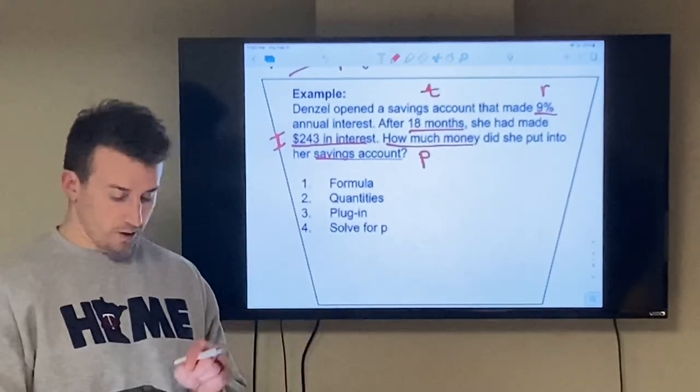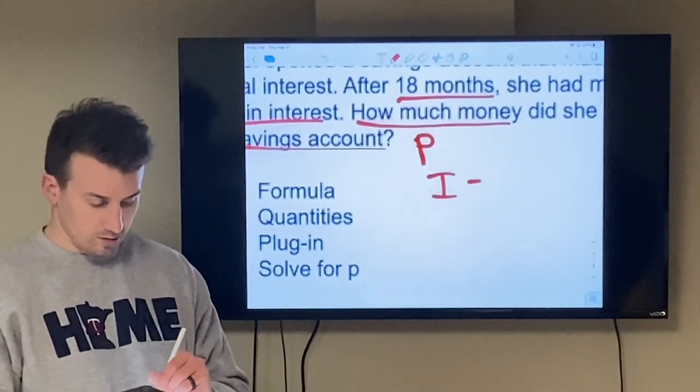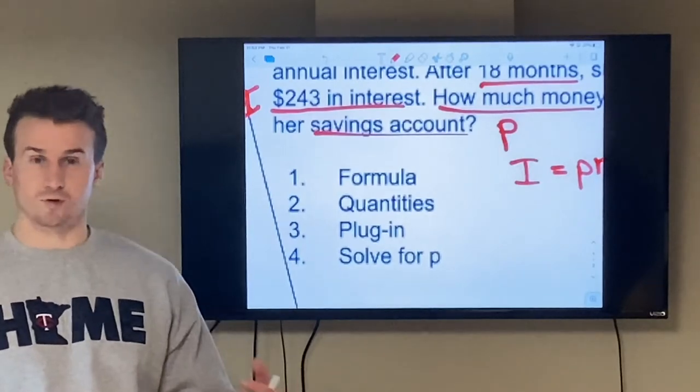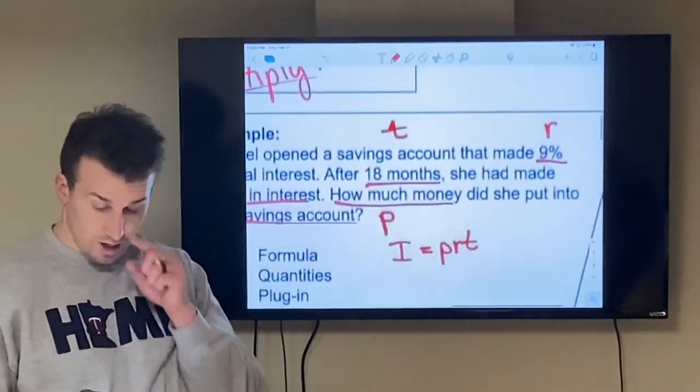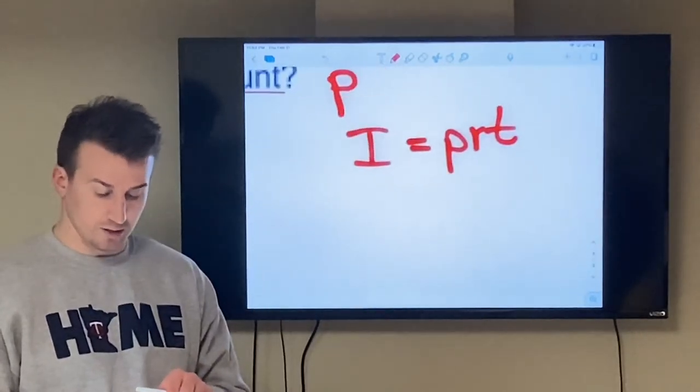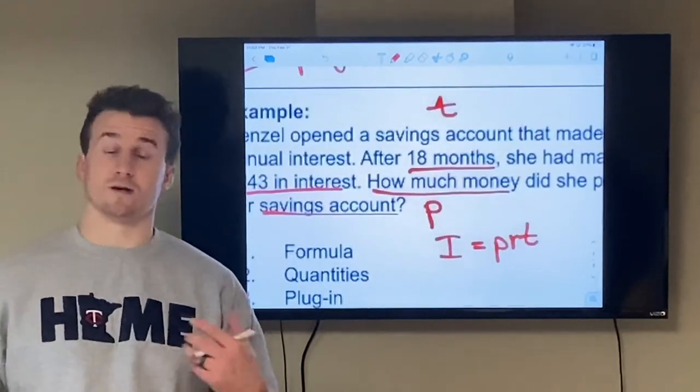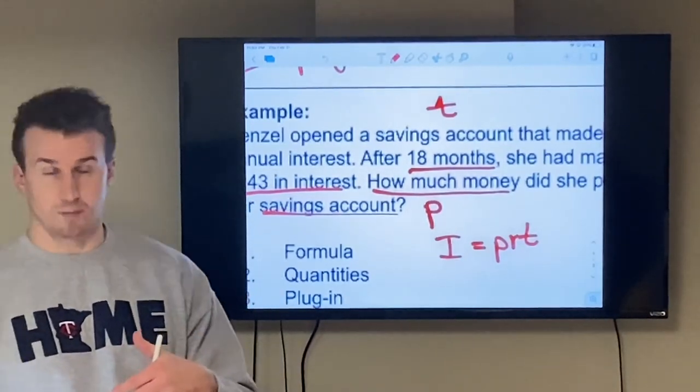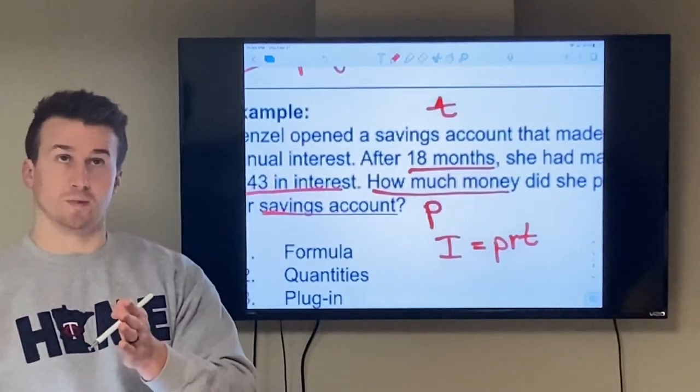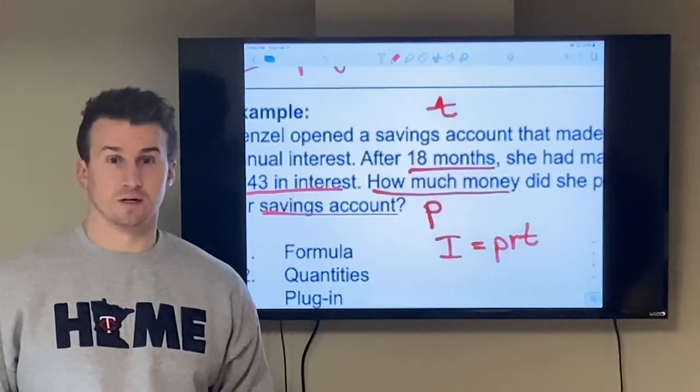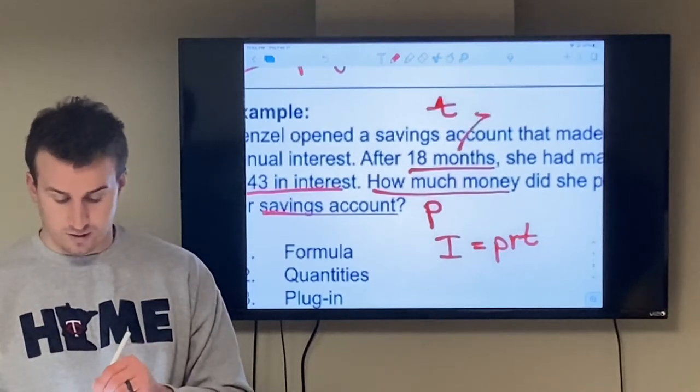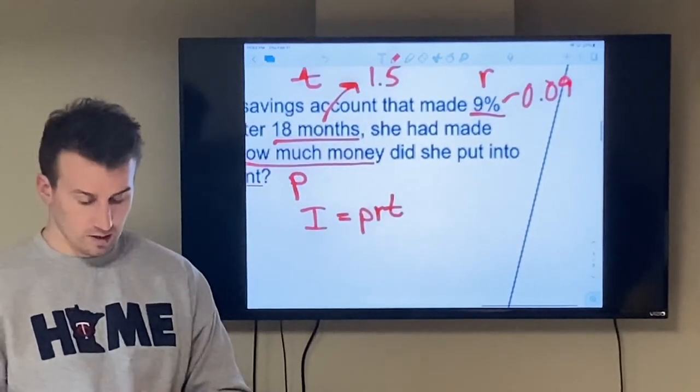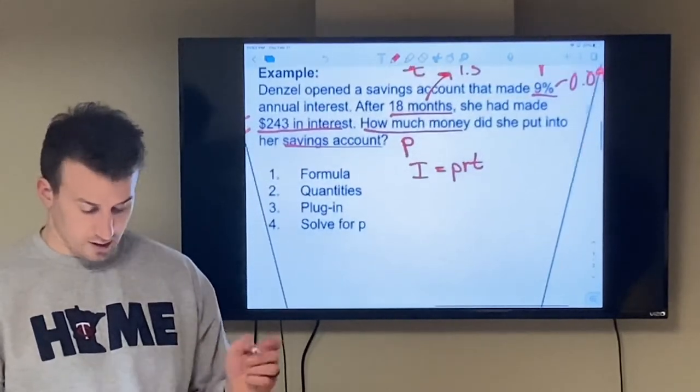So the first step, I'm going to use the formula. Interest equals P times R times T. The second step is I'm going to replace the variables with the quantities that I know from my example. So first one I know is my rate is 9%, which I need to change to a decimal. I know my time is 18 months, which I need to convert to years. So there's 12 months in one year. So I need to figure out how many years is 18 months. There's six additional months to get from 12 to 18. Six is half of a year. So that would be 1.5 years. So 18 months in years is 1.5. 9% as a decimal is 0.09. And then I have my interest of 243.